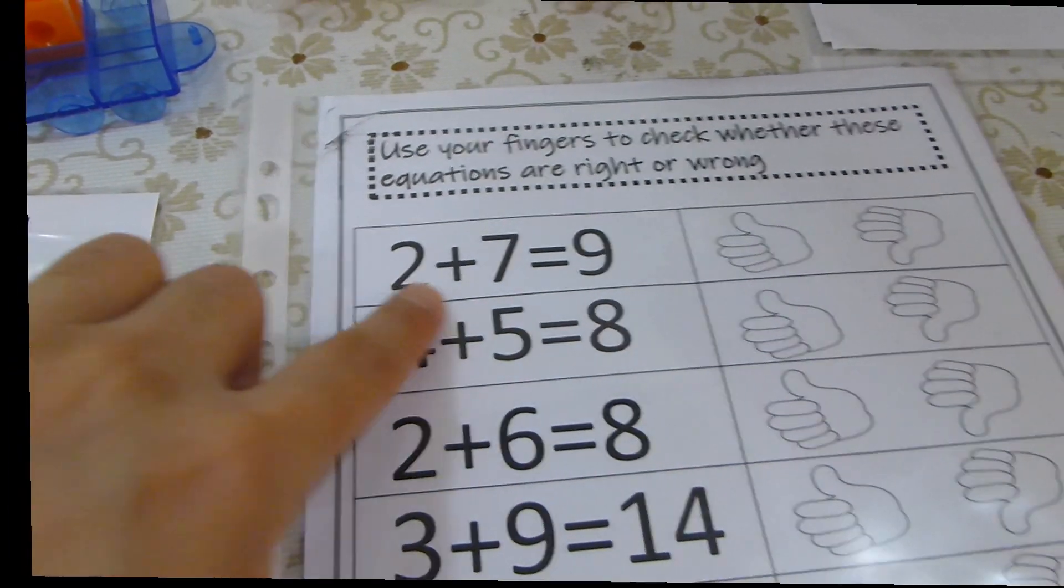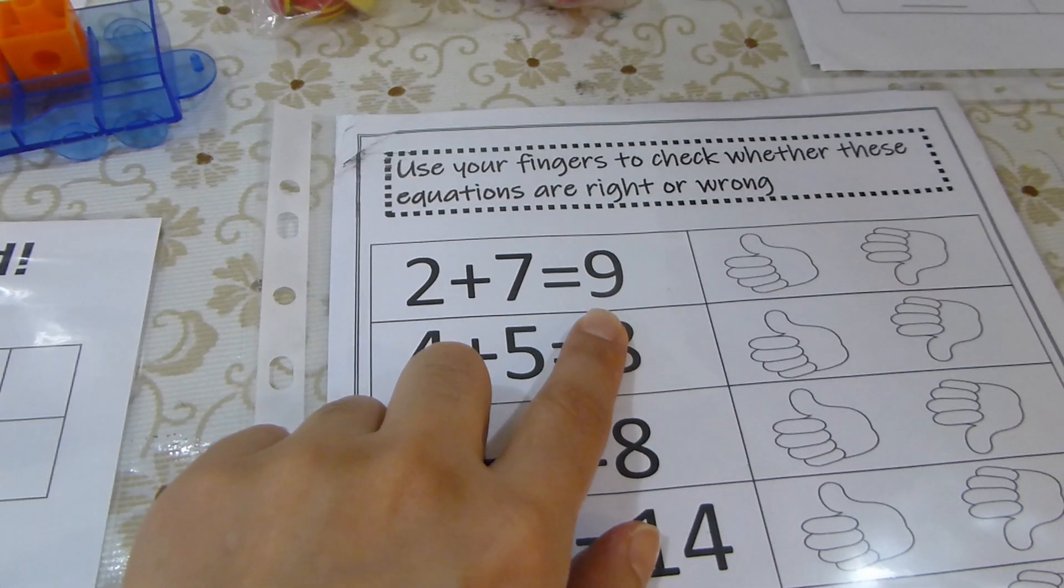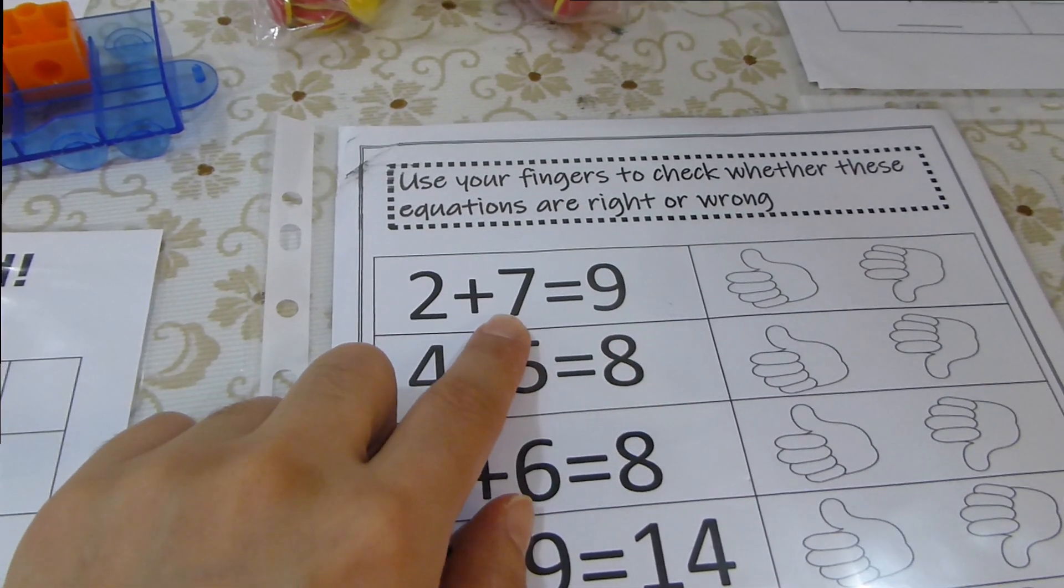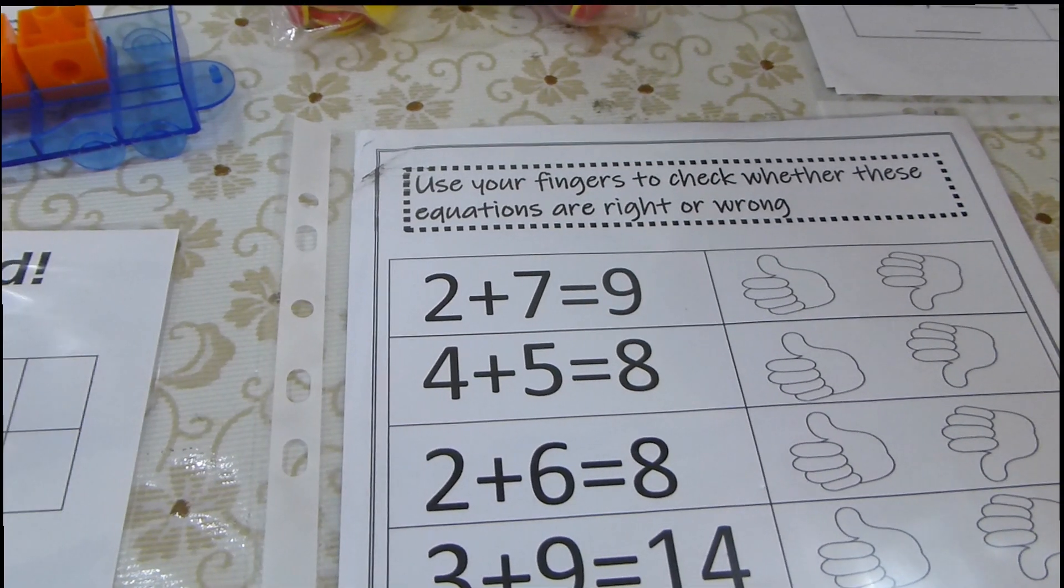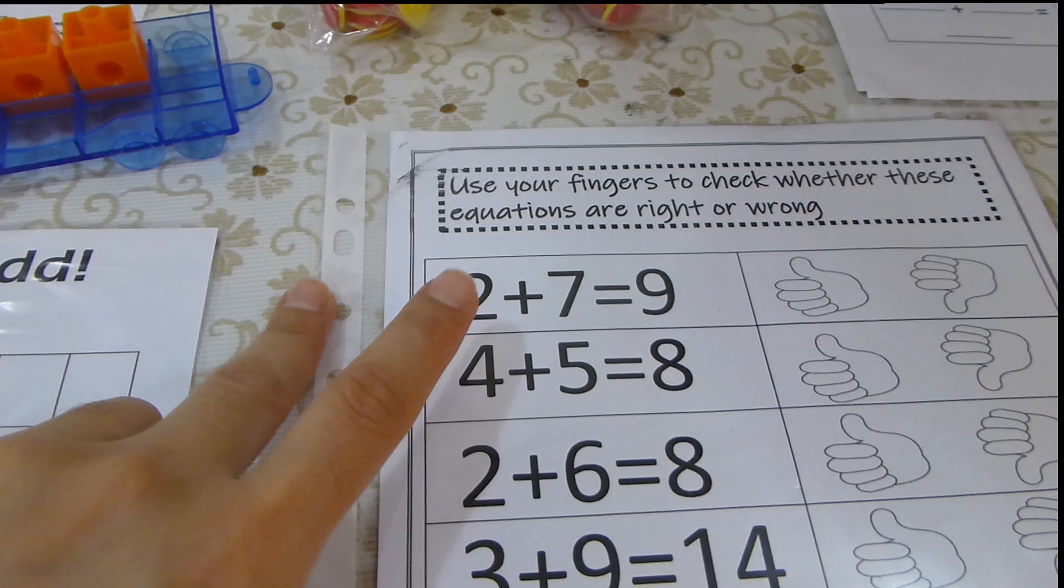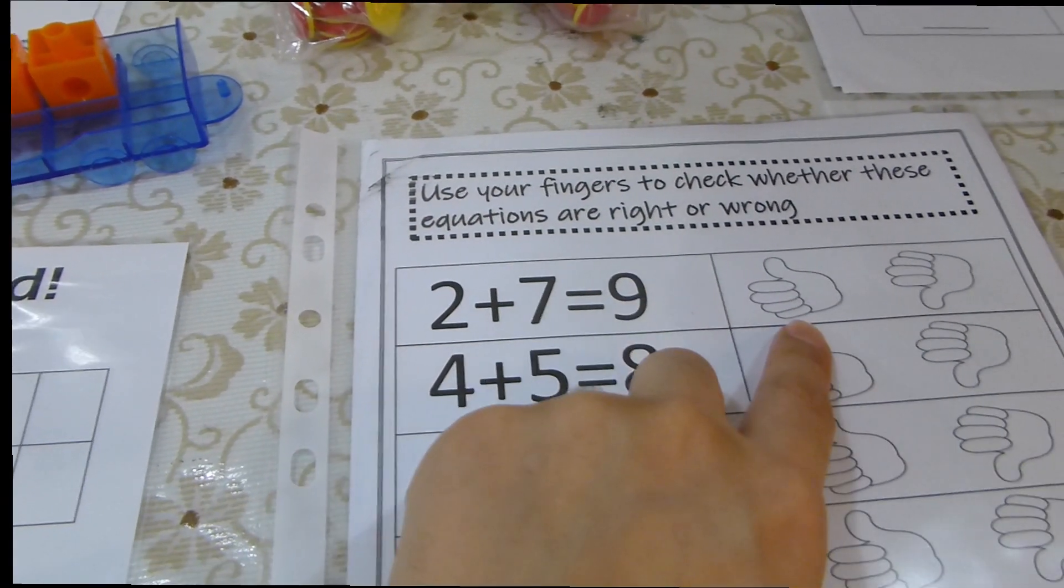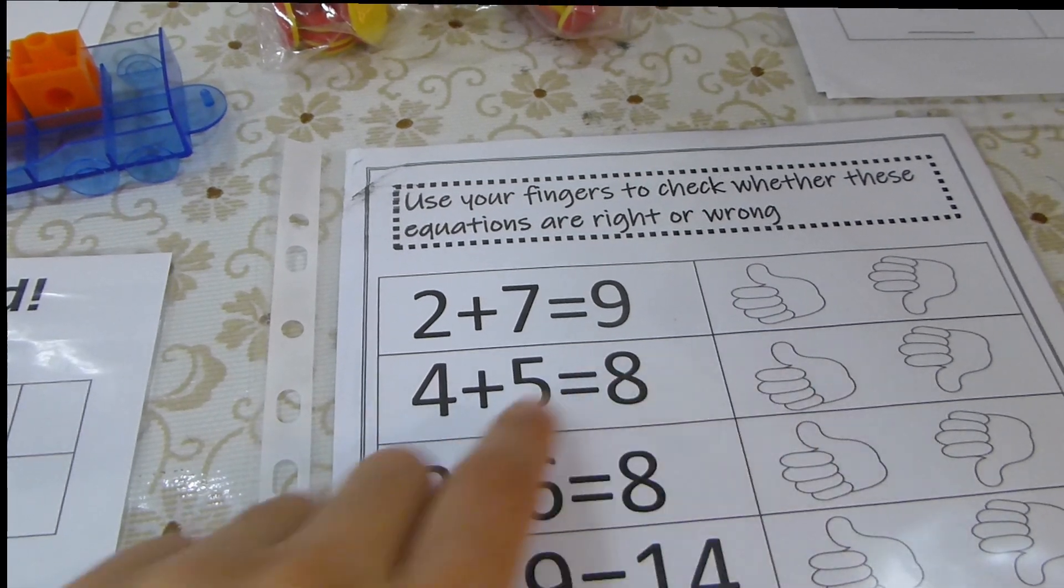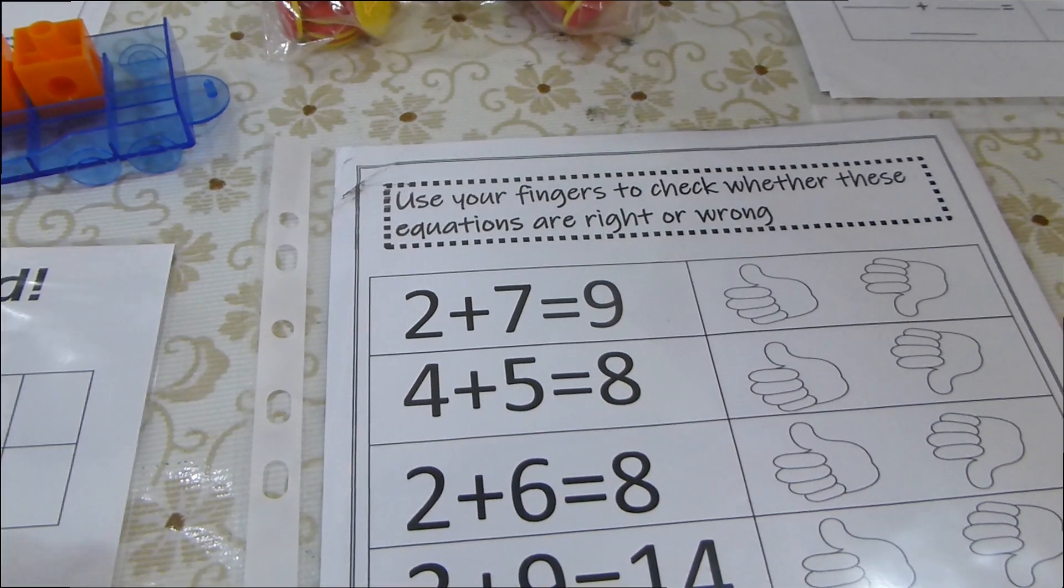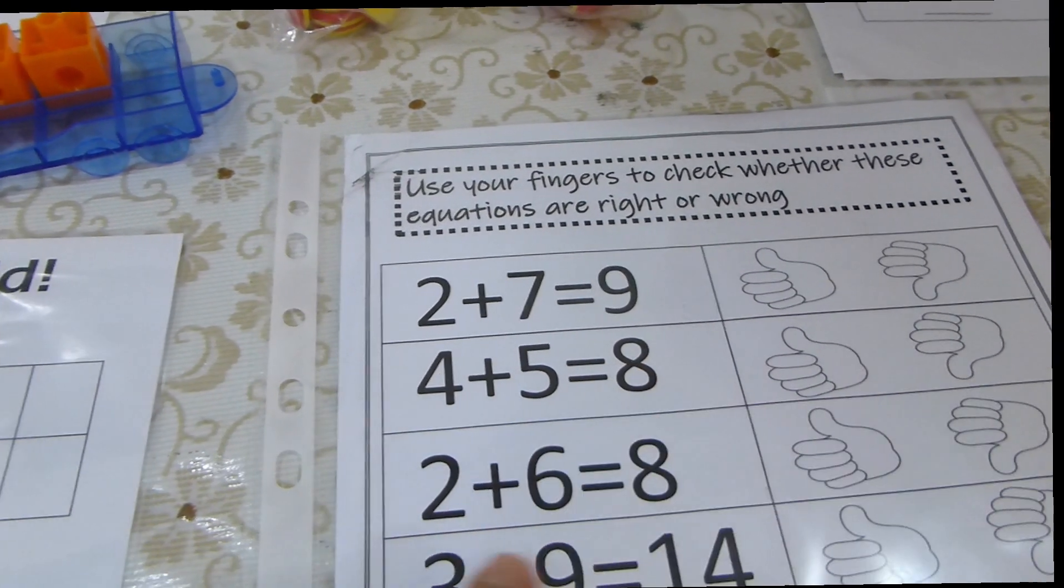Let's make the first one so you can see. 2 plus 7 equals 9. He cannot use two hands here. So what he will do is put the number 7 on the head because this is the bigger, and represent 2 on his hand. What comes after 7? 8, 9. This is right, so he will circle thumb up. The other one, he can use both hands. 4 plus 5 equals 8. No, it's equal 9. So he will circle thumb down and so on.